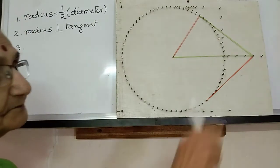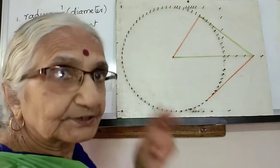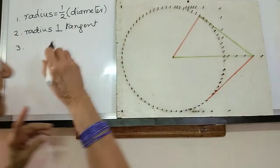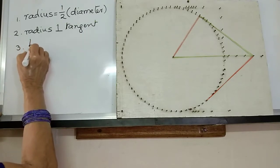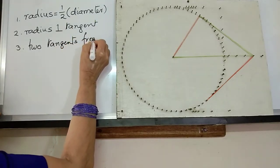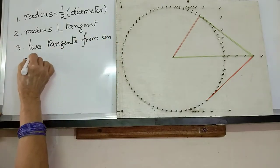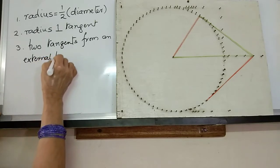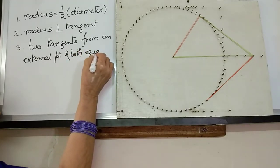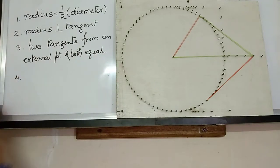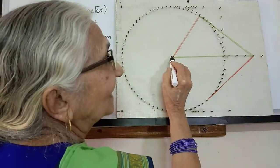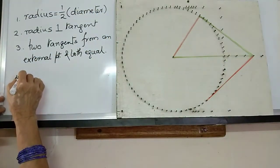The third result: from an external point, if we draw tangents we get two tangents and both tangents are equal. The fourth result: both tangents make equal angles with the line joining the external point and the center.